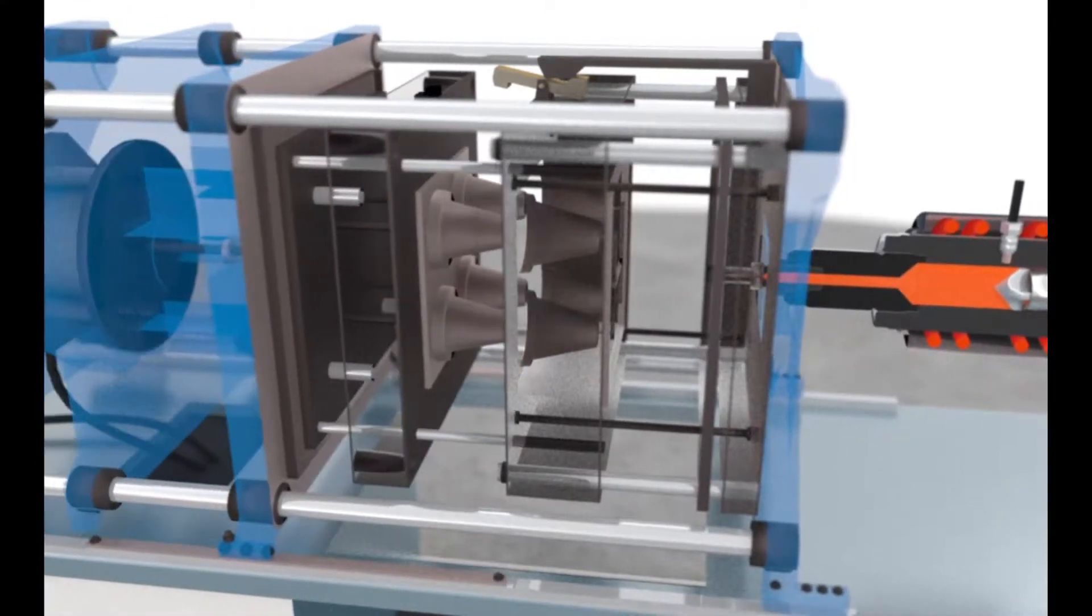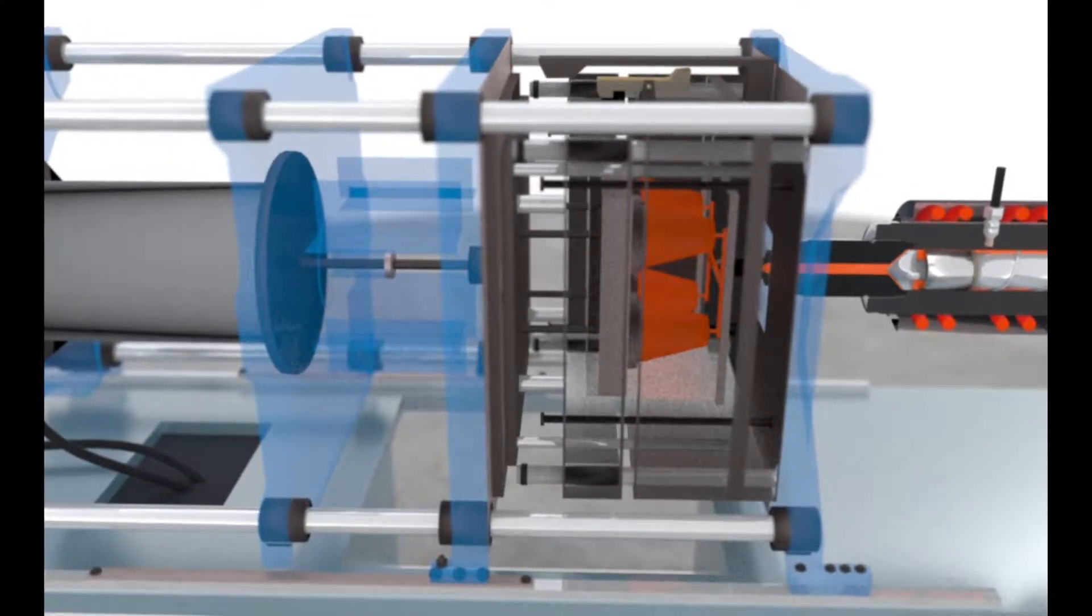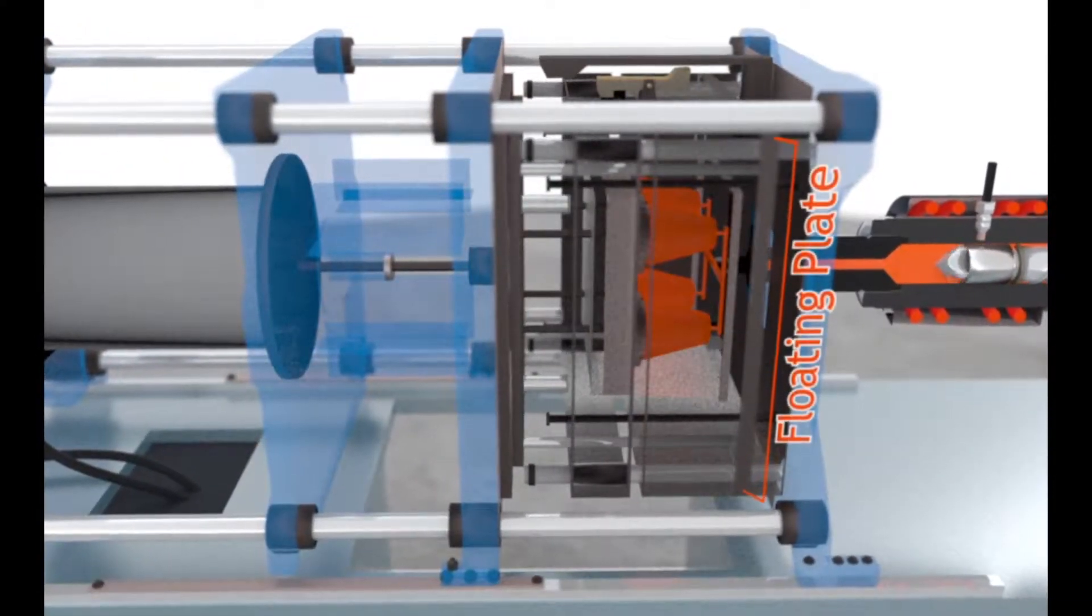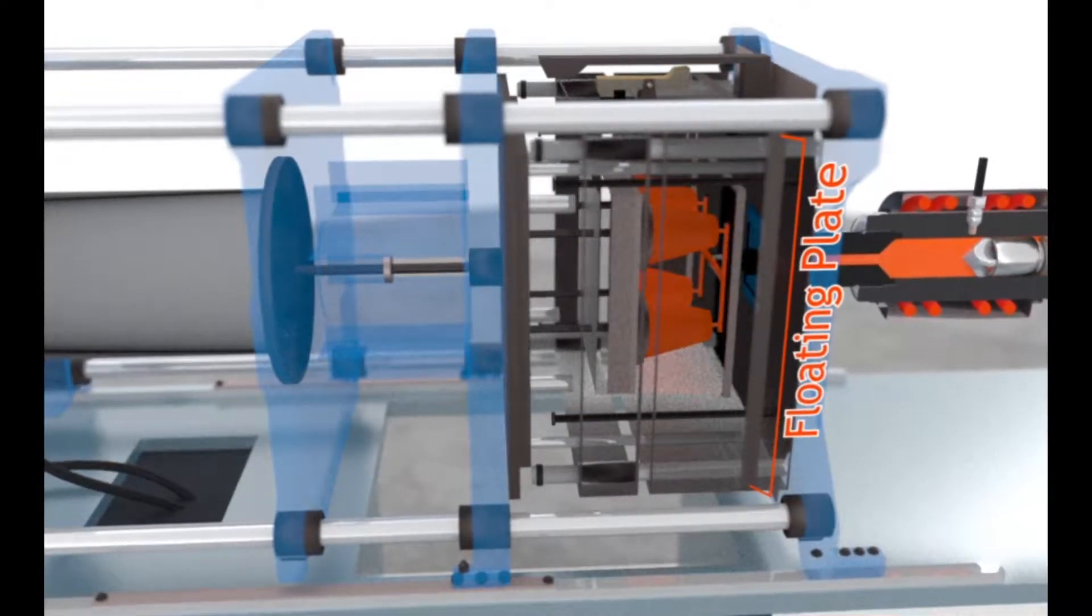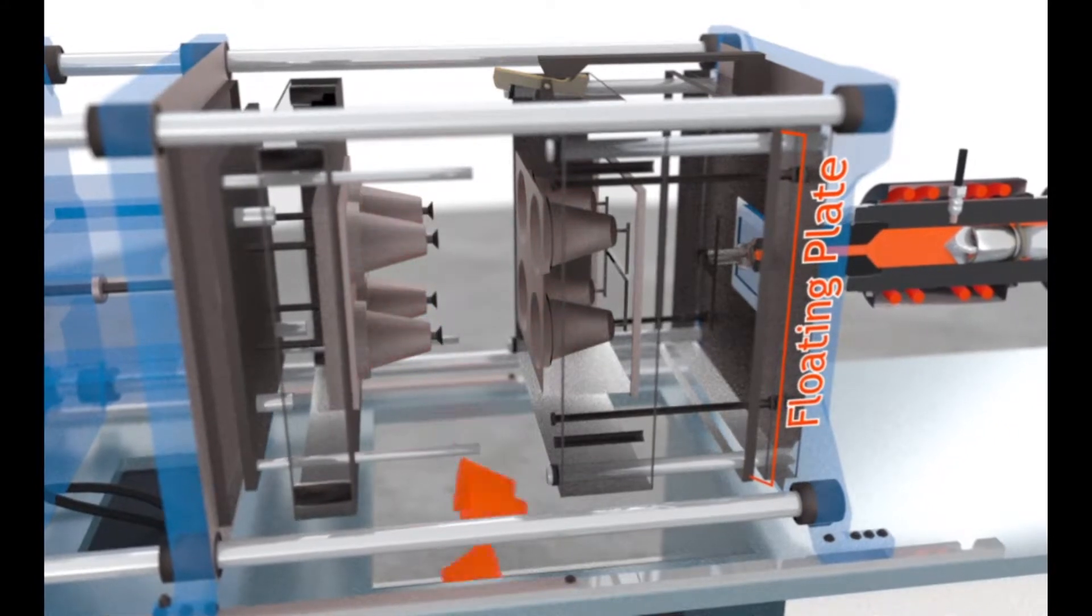Three-plate pinpoint gate systems require an additional mold parting line so they can be removed from the mold. The third, or additional, plate is called the floating plate and moves along the opening axis of the mold along the guide pins.